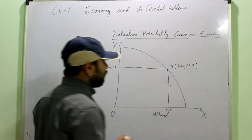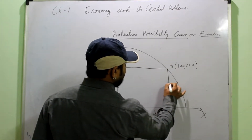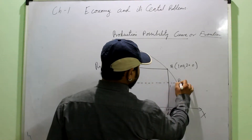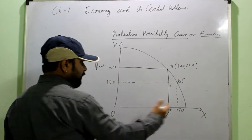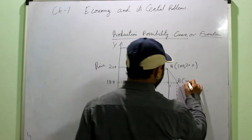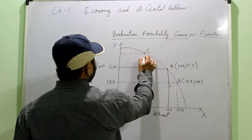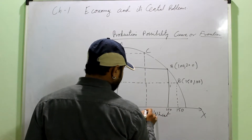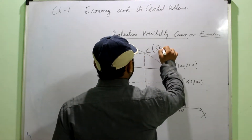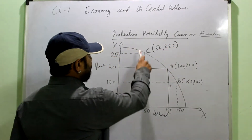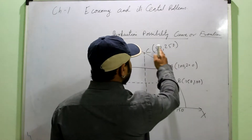If I want to increase the production of wheat, I need to move to point B on the curve — say now I can produce 150 units of wheat and 100 units of rice. Similarly, moving to point C, if I want to increase the production of good Y, say I produce 50 units of wheat and 250 units of rice. These are the various combinations lying on the production possibility curve, representing what an economy can produce for good X and good Y.